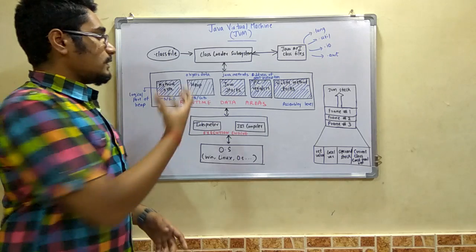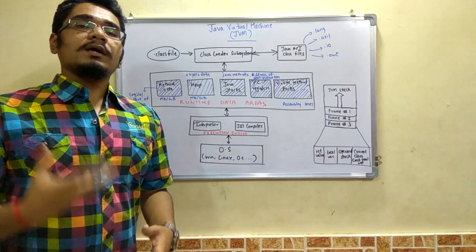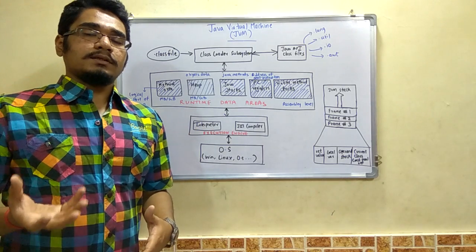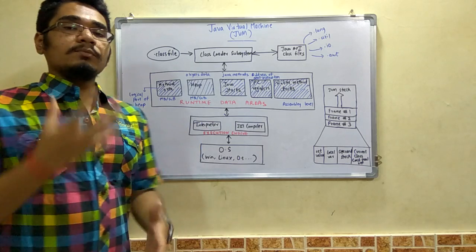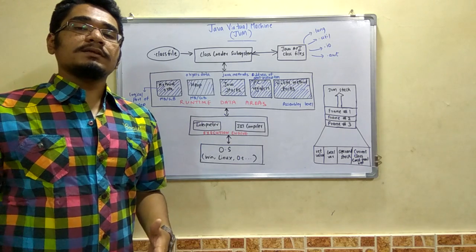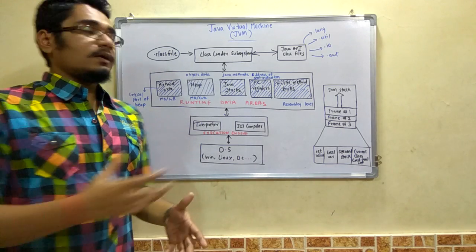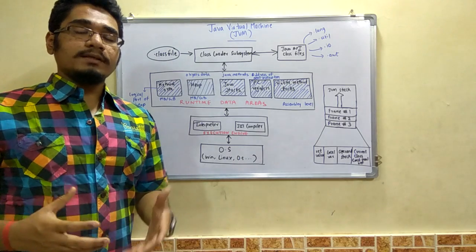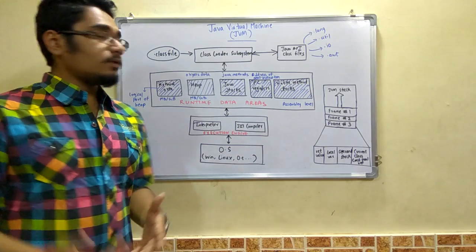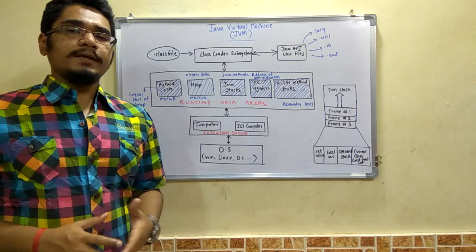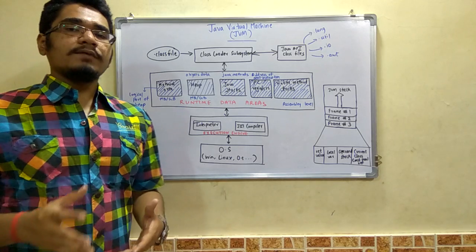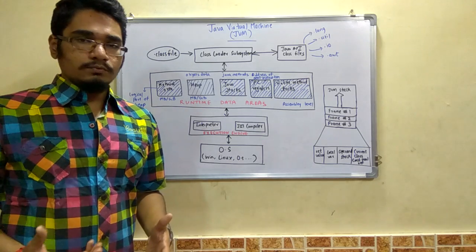And from the heap, which all objects are referenced, it will be then moving to the survivor space and the hidden space - I will talk about these things in the future videos. Now this heap space is by default given a value of 1GB, that is 1024 bytes.